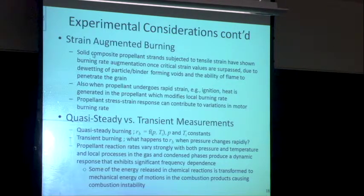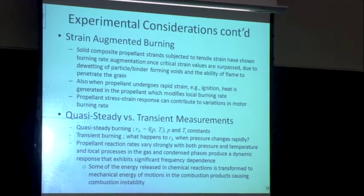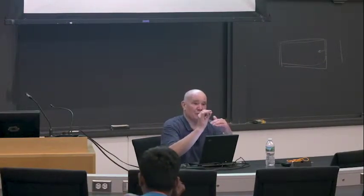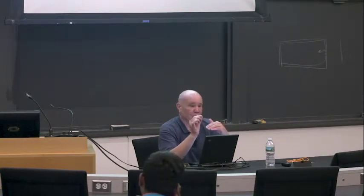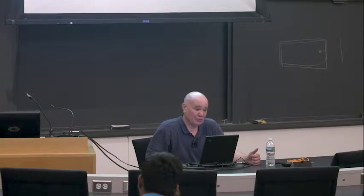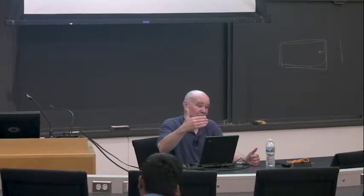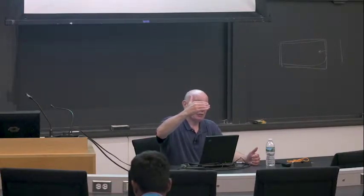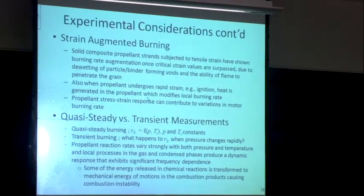Strain-augmented burning: if I take a strand and subject it to elongation and relaxation — like thermal cycling — the burning rate changes afterward. The most likely reason is that elongation opens up small voids near the surface between oxidizer particles and the binder, creating cracks that change the burning rate. This is very important in motor casting: if the grain was cast at slightly different temperatures and has different stress at different locations, I'll have different burning rates.